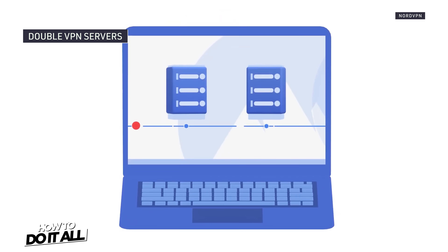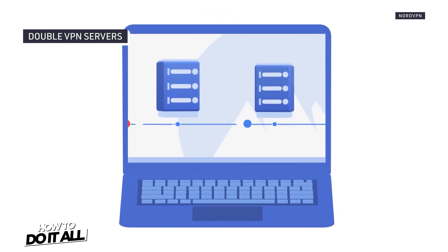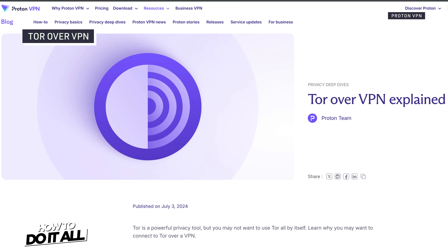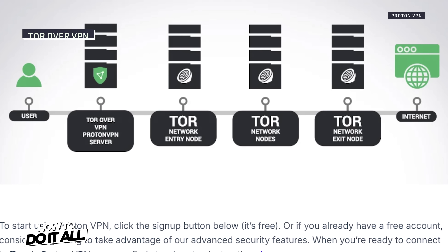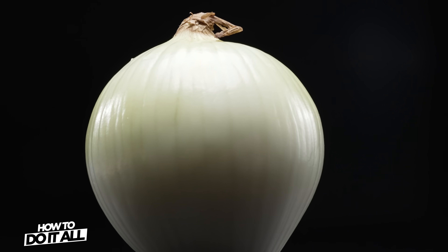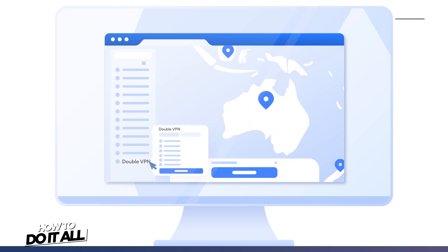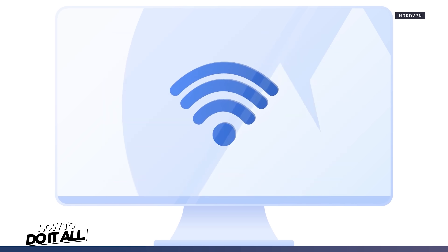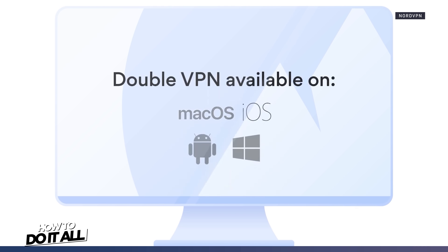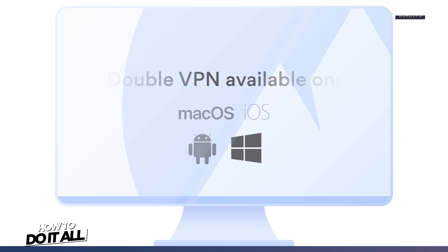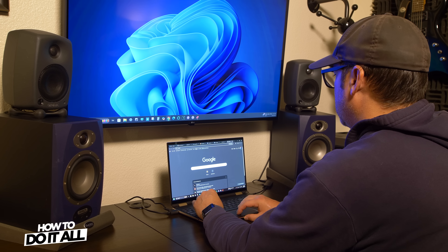Double VPN servers use two VPN connections instead of just one, while Tor over VPN servers use Tor, or the Onion routing, to improve privacy even further. Because Onion over VPN and double VPN servers are normally noticeably slower than a traditional single-connection VPN hop, we recommend those for folks with serious privacy needs rather than for streaming, gaming, and general web browsing.